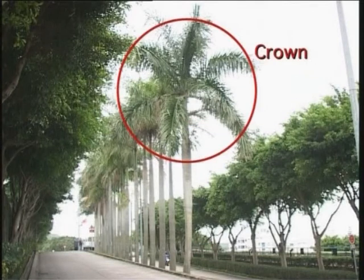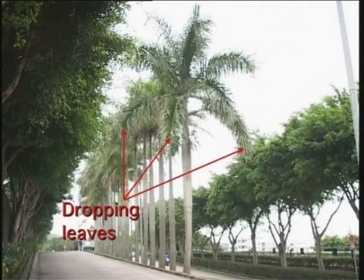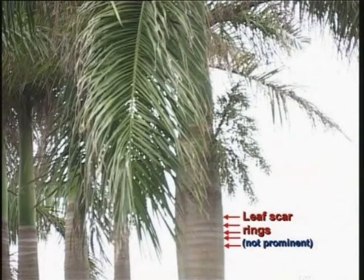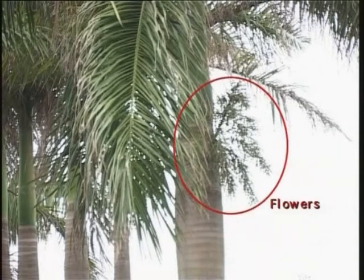The crown is round in outline, with large, feather-shaped compound leaves. The lower leaves always droop and obscure the crown shaft. The leaf scar rings are visible but not prominent. The flowers are small and numerous, integrated as a much-branched inflorescence arising below the crown shaft.